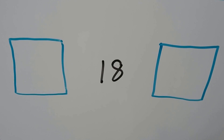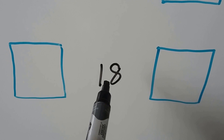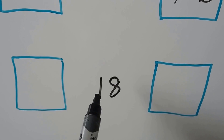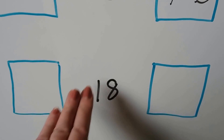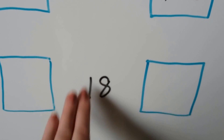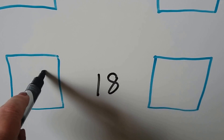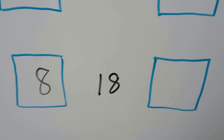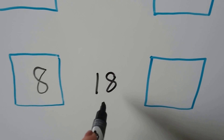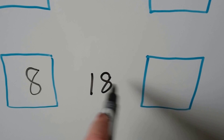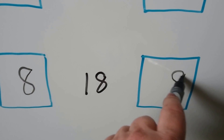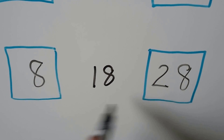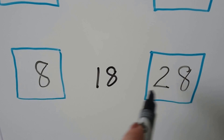Let's try this one — it's a little trickier. We have 18. If we had one less 10, there's only one 10 here, so if we took this 10 away, we'd have 8. There would be no 10s. For one more 10, we'd have the same ones and add one more to the tens place — instead of 1, it would be 2. So we have 8, 18, 28.